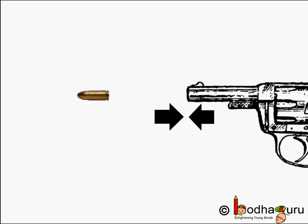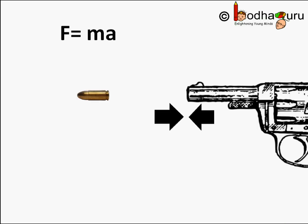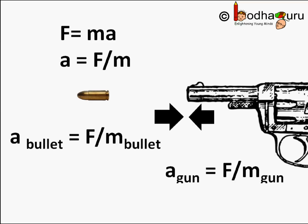You may wonder then, why doesn't the gun get accelerated as much as the bullet? We know from the second law of motion, force is equal to the product of mass and acceleration. The force being the same, the action and reaction produce the same force.